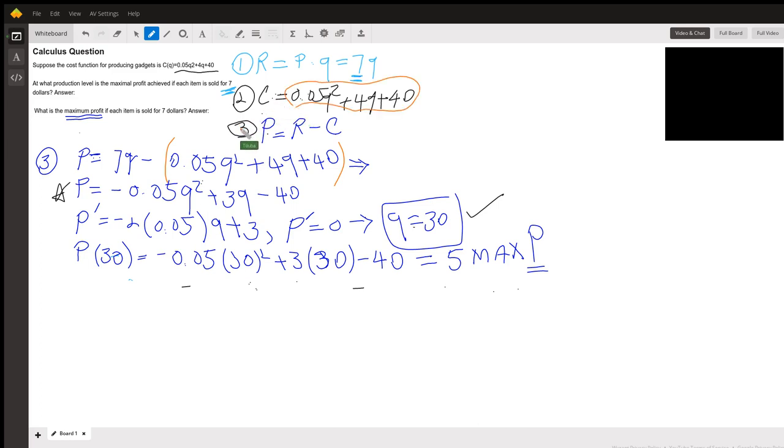Number three, profit. Profit equals revenue minus cost. So by doing that, we can make the equation for profit.